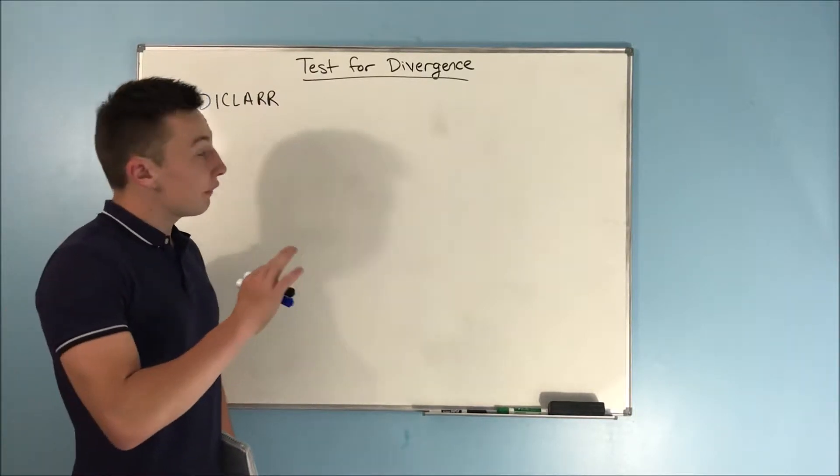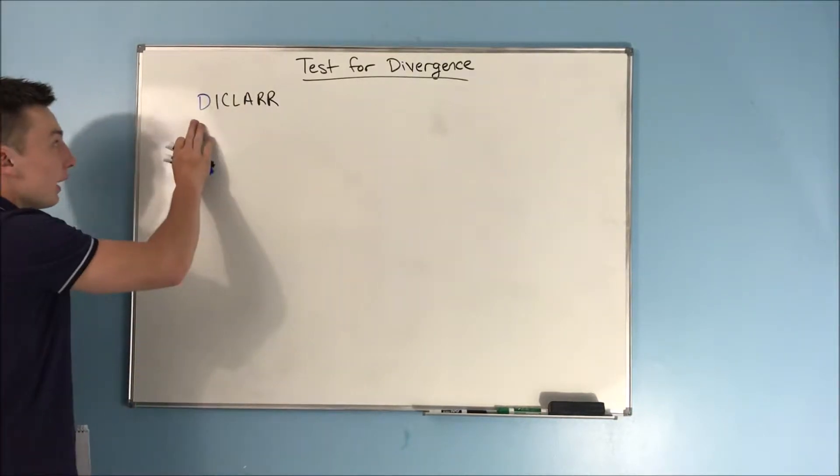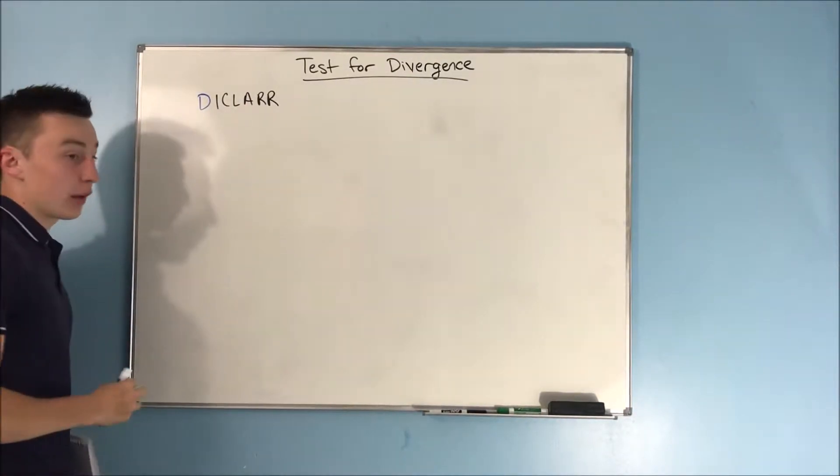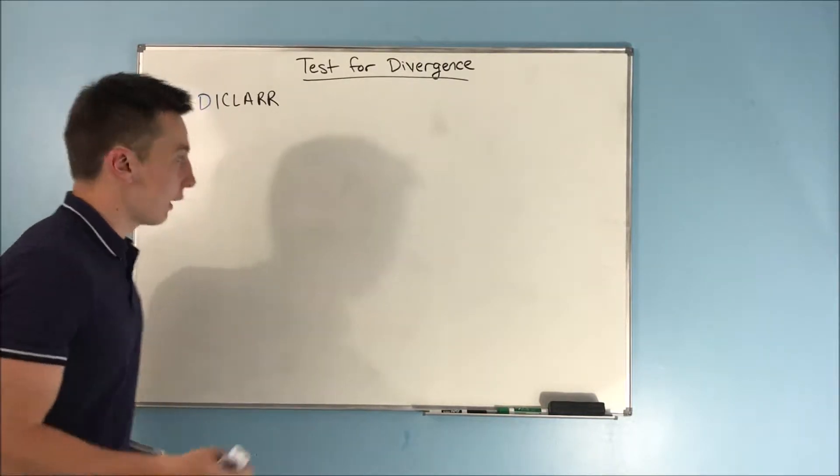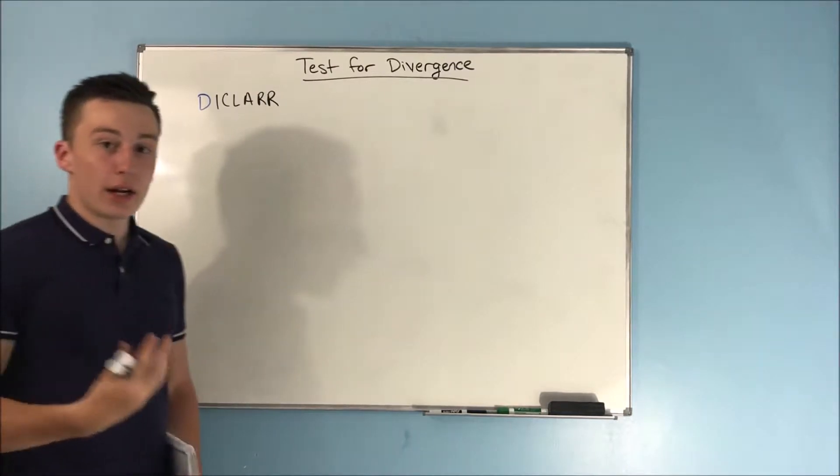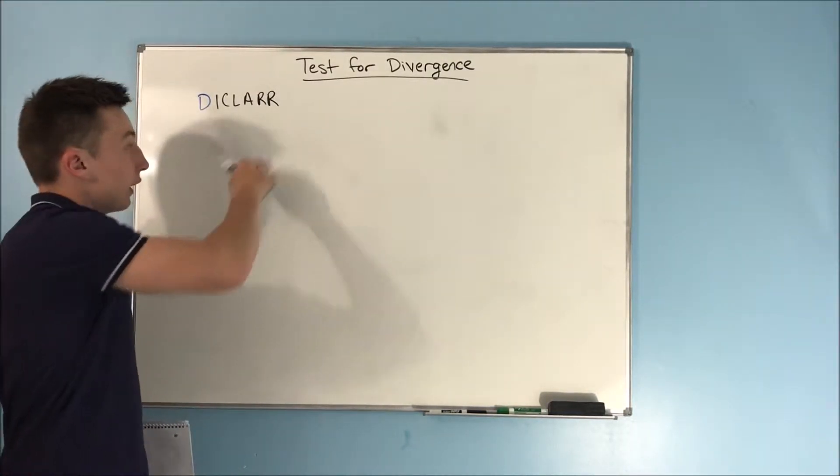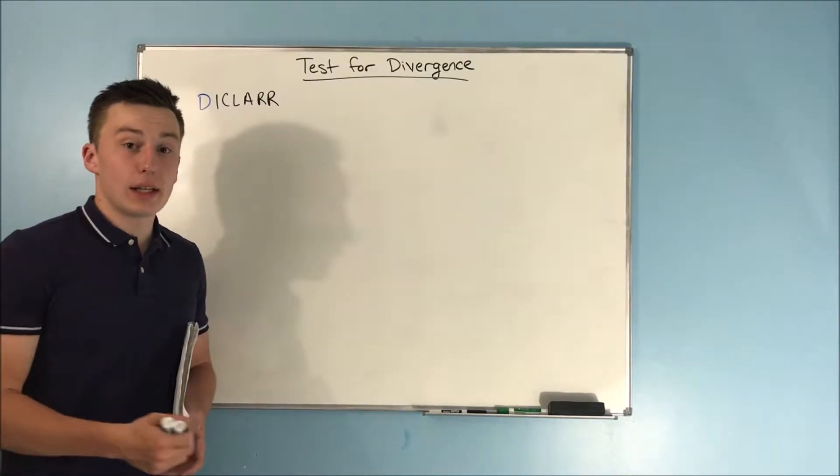And this is one of the seven tests that we're going to learn. And those seven tests are in this acronym DICLAR, which I will be referring to frequently. The test for divergence is going to be the D in DICLAR. And then we're going to learn the rest in the coming videos. So without further ado, let's get into it.